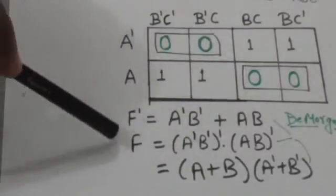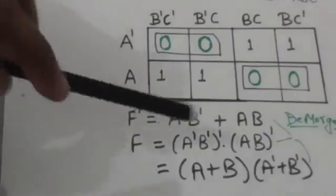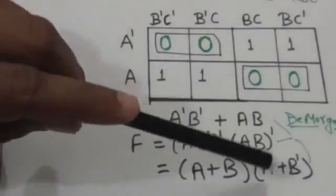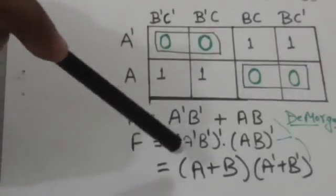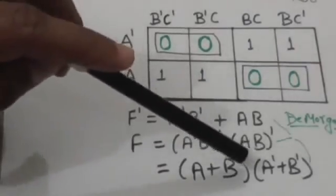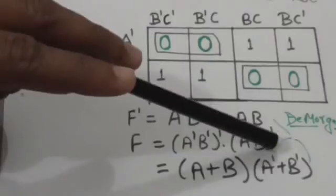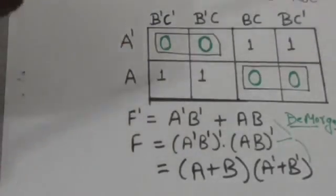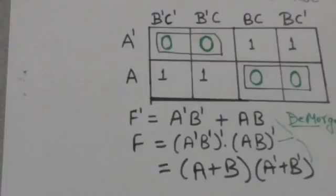So the function f is expressed in the form of Product of Sums: f equals (a plus b) and (a-not plus b-not). Thank you very much.